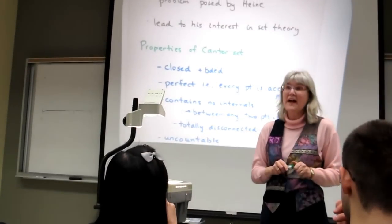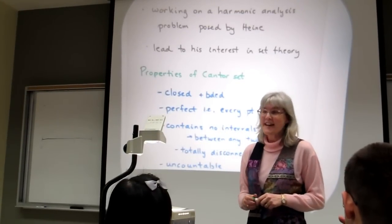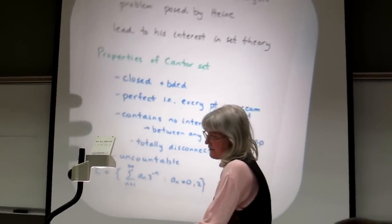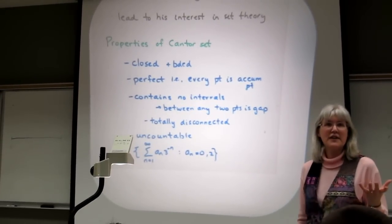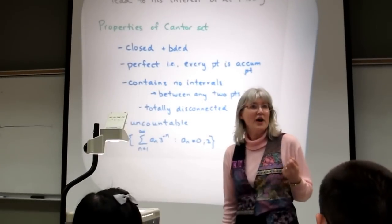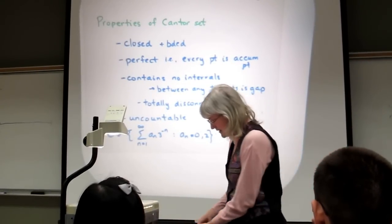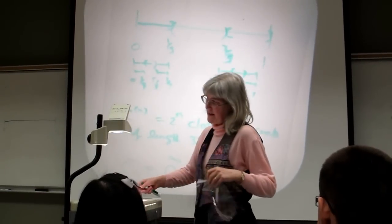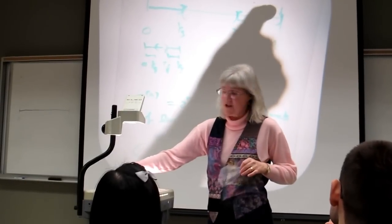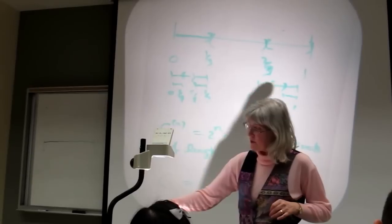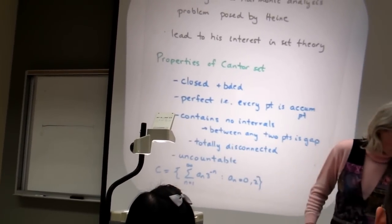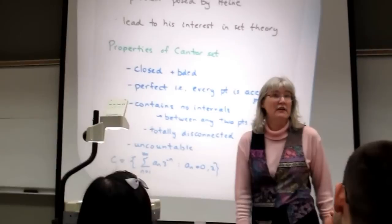The Cantor set is uncountable. One way to see this is through base-3 representations: every real number in [0,1] can be written with digits 0, 1, and 2 in base 3, and the elements of the Cantor set are those which do not use the digit 1. The intervals removed in the construction are exactly those requiring digit 1. This puts the Cantor set in one-to-one correspondence with binary representations of numbers in [0,1].